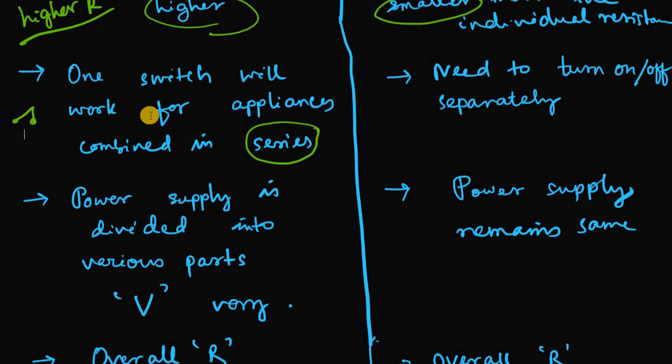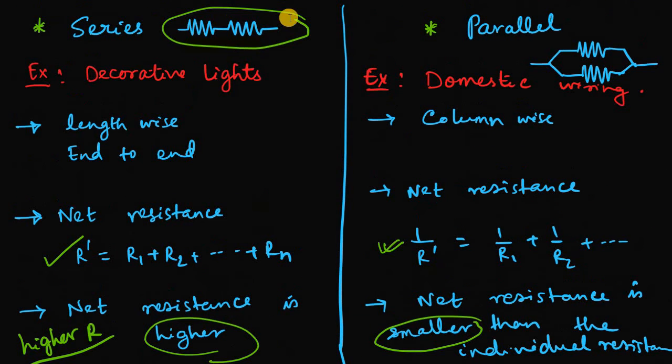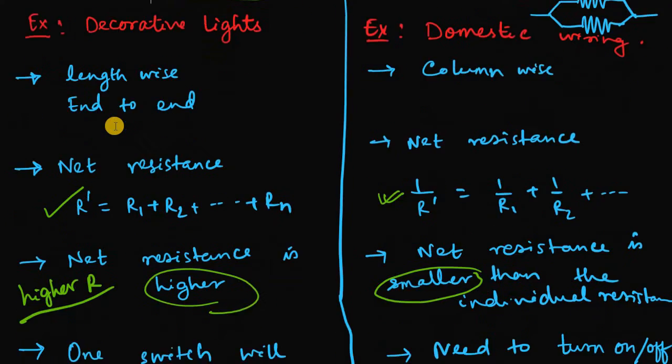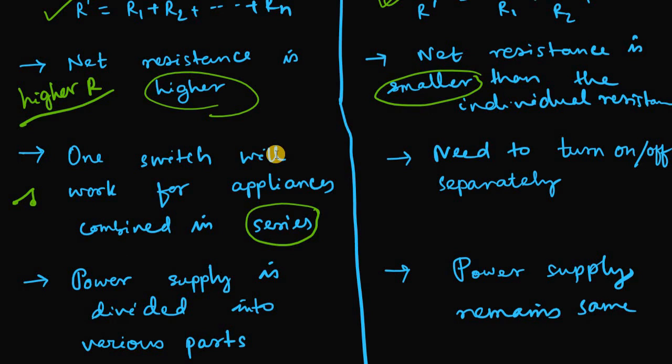As the resistors are in series and end to end like this, if you put one switch turn on here then all start conducting. When you turn it off then all the appliances in a row are shut down. So that's why I have written in series combination one switch will be enough for appliances combined in series combination.